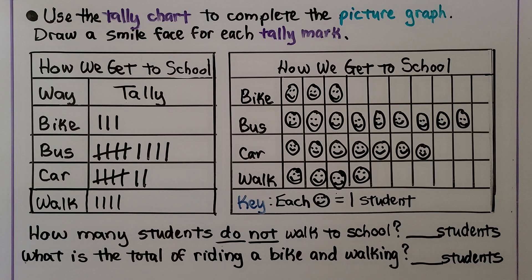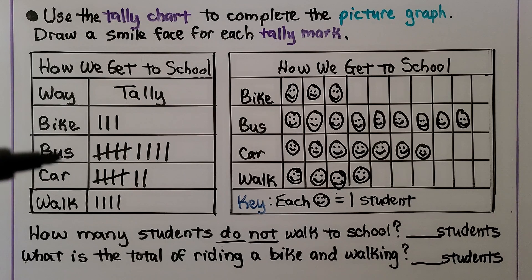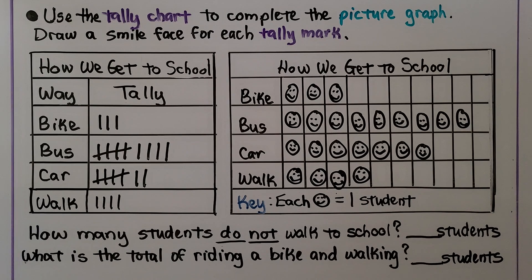To find how many do not walk, we count bike, bus, and car. Bike is three, bus is nine, and car is seven. We add seven and three to make ten, and nine more is nineteen. We don't count walking since we're finding how many do not walk. The answer is nineteen.